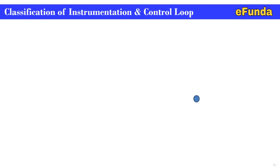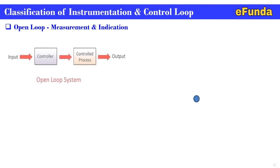Starting with classification of instrumentation and control loop — open loop, measurement and indication. One can see the open loop system in a block diagram form where input is given to the controller, the output of the controller is given to the control process, and finally we get the final output as seen in the system block diagram.